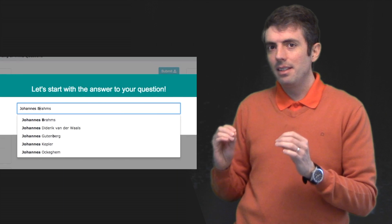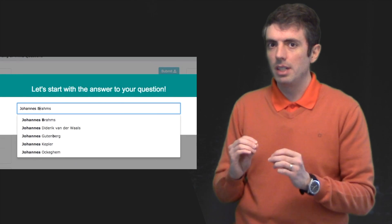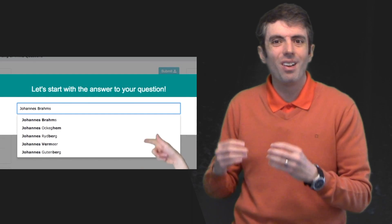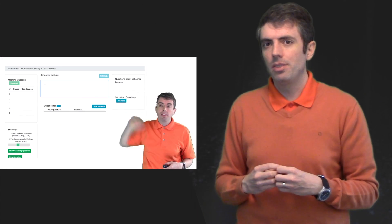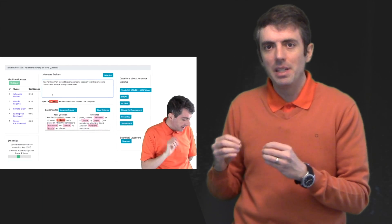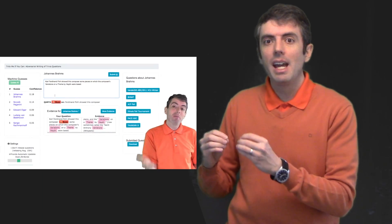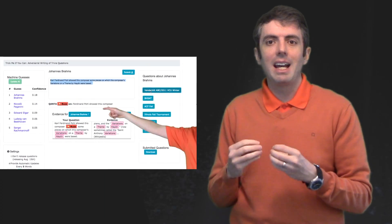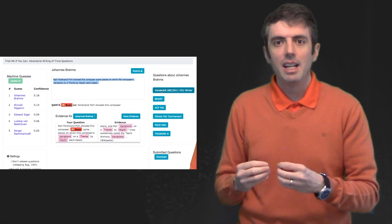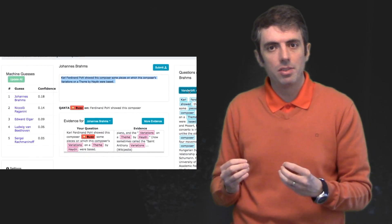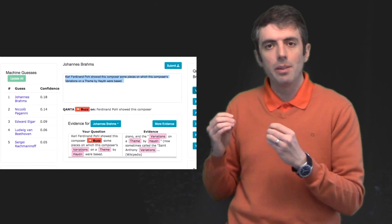To understand these differences between computers and machines, we have built a series of questions that we call adversarially written questions. These questions are designed to be difficult for both computers and humans to answer. In the first video, I talk about how these questions are authored in a human-computer collaboration where humans craft questions painstakingly, word by word.